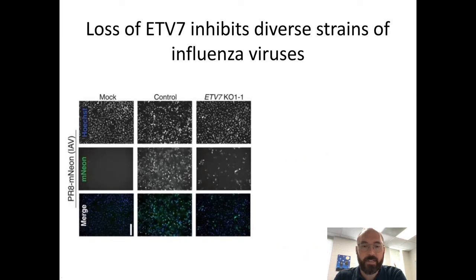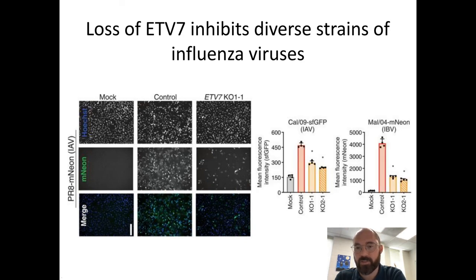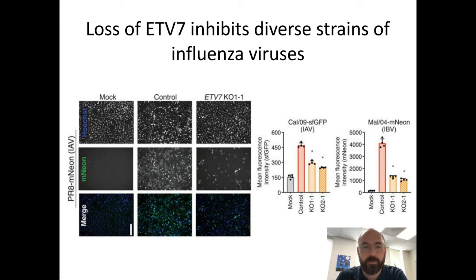Imaging of virus spread using a GFP-expressing virus shows virus spreading across the plate in control cells, while in knockout cells the antiviral response restricts spread. This effect is not strain-specific: other strains of influenza A such as California 09, and influenza B virus Malaysia 04, are both restricted. It seems we've accomplished our goal of finding a host factor that can broadly restrict influenza viruses.